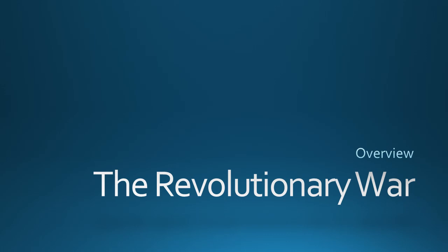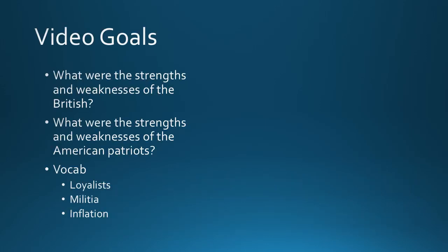Hey guys, this slideshow is designed to give you a big-picture overview of the Revolutionary War. We'll be looking specifically at the strengths and weaknesses of both the American and the British sides, and seeing what each side needed to do in order to win the war. By the end of this video you should be able to state both the strengths and weaknesses of the British and the Americans. Also, there are three vocab terms — Loyalist, Militia, and Inflation — that I want you to know by the end of this video.